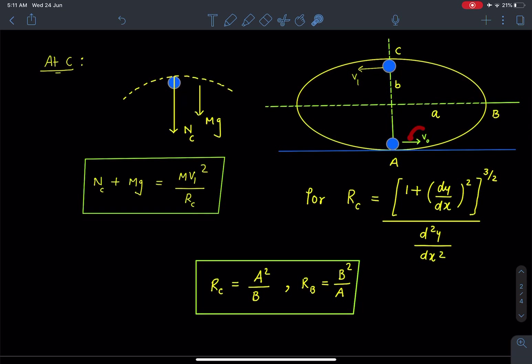So we have to choose a velocity V₀ in such a way that this particle can just reach point C. After that, again it will come in contact with the elliptical track again. So if we draw the free body diagram at the topmost point...